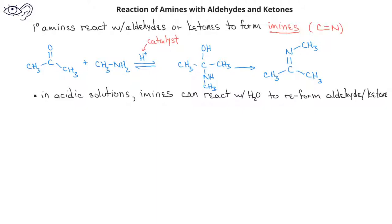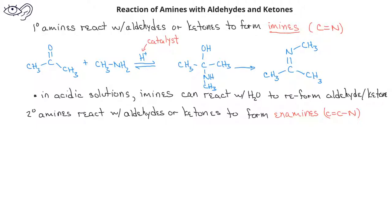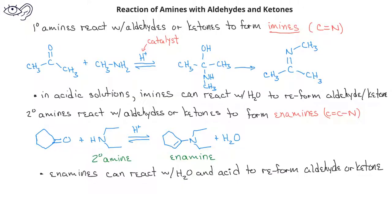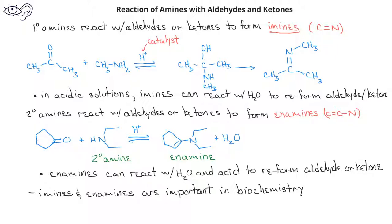If we have a secondary amine reacting with an aldehyde or ketone, we form a functional group known as an enamine. As you might guess from the name, an enamine has both a carbon-carbon double bond, and one of those carbons has a single bond to a nitrogen. As with imines, enamines can be hydrolyzed back to their aldehyde or ketone in aqueous acidic solutions. When you get to courses in biochemistry, you'll see some of the biological uses of imines and enamines.